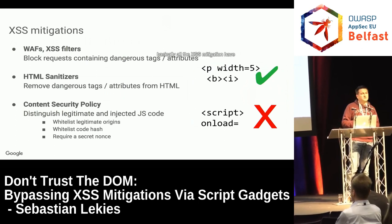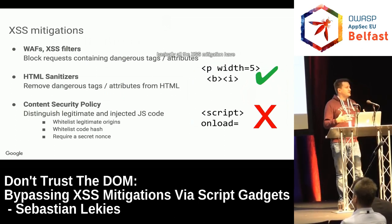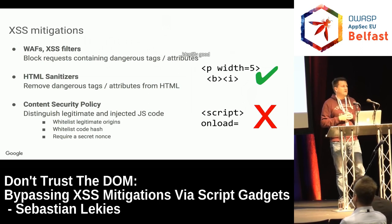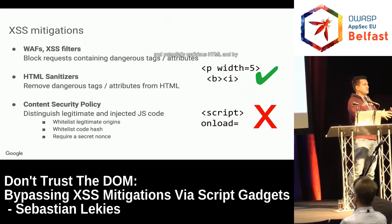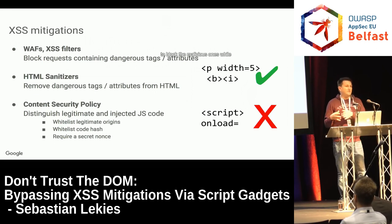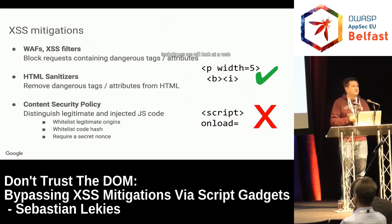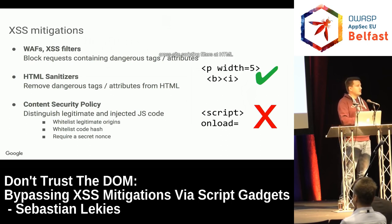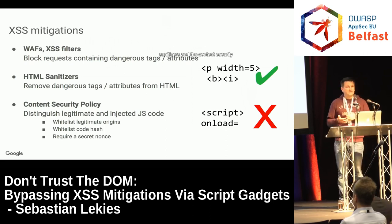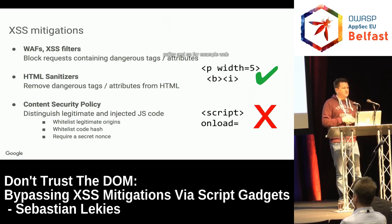Basically all XSS mitigations have one main assumption: they try to identify good and potentially malicious HTML and block the malicious ones while allowing the good ones. Today we will look at four different mitigation techniques: web application firewalls, browser-based cross-site scripting filters, HTML sanitizers, and the content security policy.